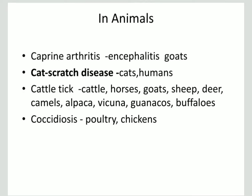Next, in animals: caprine arthritis encephalitis in goats, cat scratch disease in cats and humans, cattle ticks in many organisms such as goats, horses, cattle, and sheep, and coccidiosis in poultry and chickens. These are a few of the animal diseases caused by bacteria.